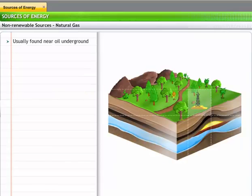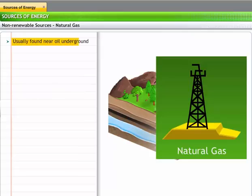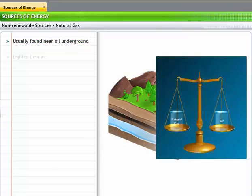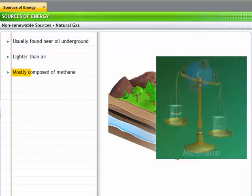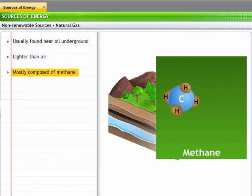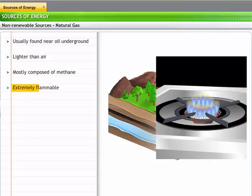Like coal and oil, natural gas is also found in rocky deposits below the Earth's crust. Natural gas is lighter than air and is mostly composed of methane gas. It is extremely flammable.